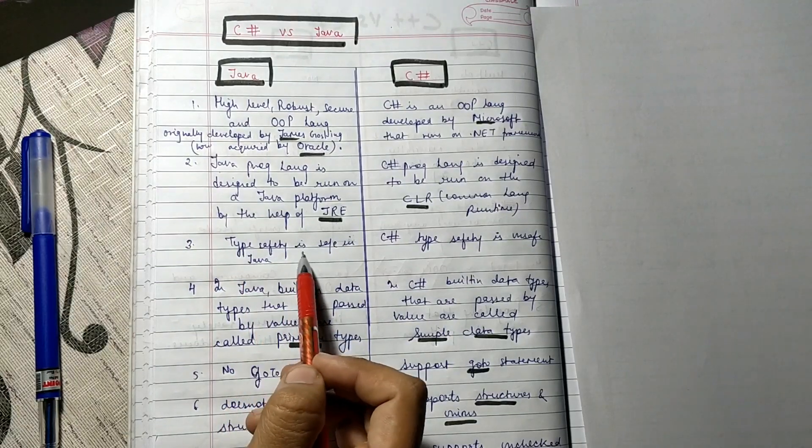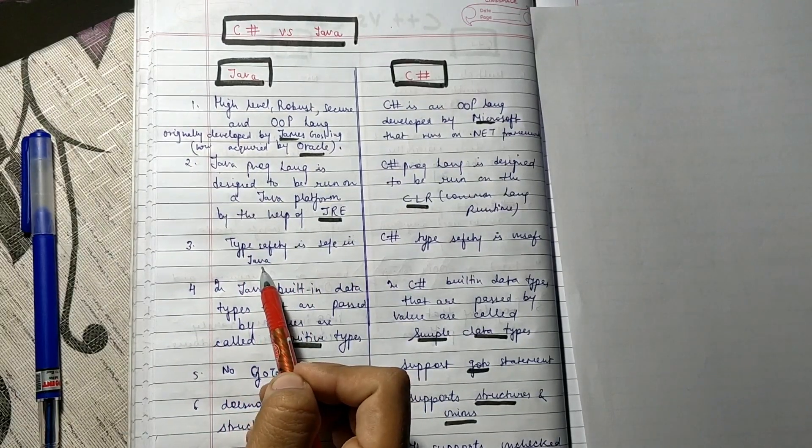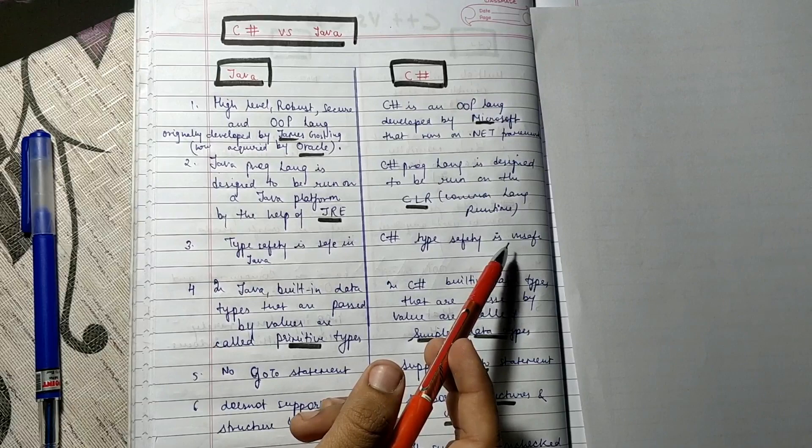In Java, type safety is safe, and in Java type safety is not safe.